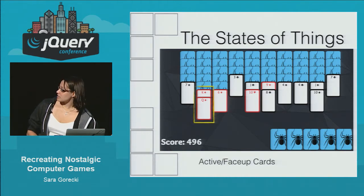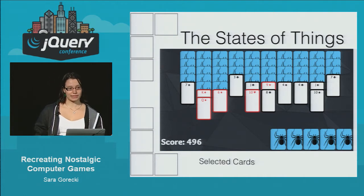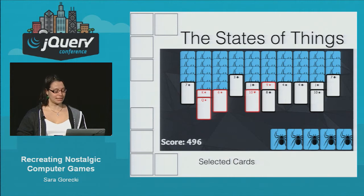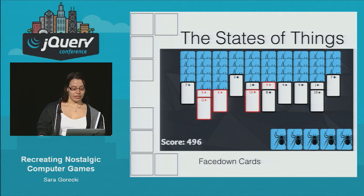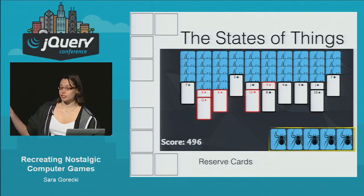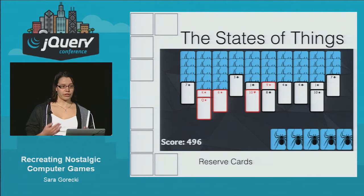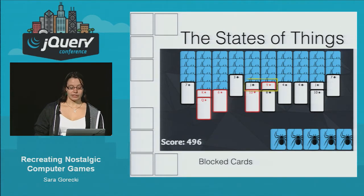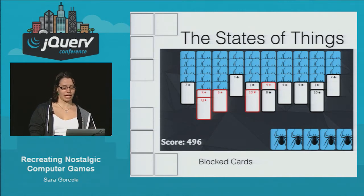We have our active cards — these are active and face up, the ones we can interact with and select. If we clicked on the king of diamonds, the queen of diamonds would also become selected because they're stacked on top of each other. We also have our face-down cards, which is the vast majority of the board when we first start out — these can't be interacted with. We have reserve cards in the bottom corner that can be dealt to the board, one card to each column. And we have blocked cards — the ones that have a different suit on top of them, which we need to uncover before we can access and move them.